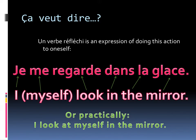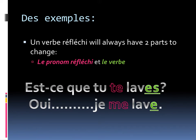Fantastique, you say. Qu'est-ce que ça veut dire? How does this work? Un verbe réfléchi is basically an expression of doing this action to oneself. So a sentence en français might look like, je me regarde dans la glace — literally, I look at myself in the mirror. This is how it would look word for word. Practically, we say, I look at myself in the mirror. You'll notice, avec les exemples, that un verbe réfléchi will always have two parts to change.